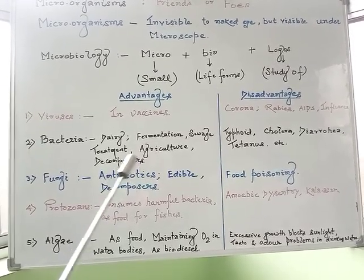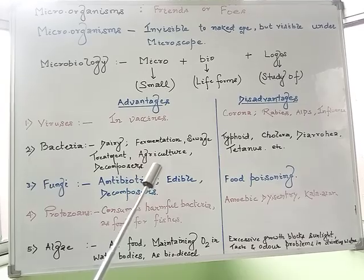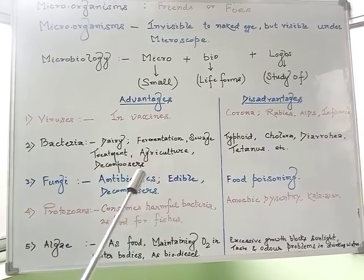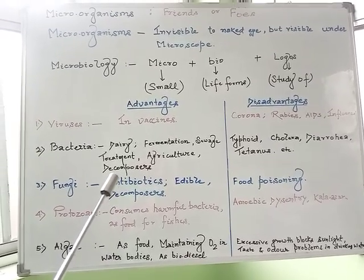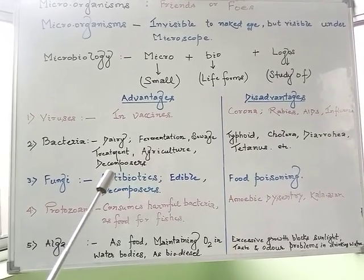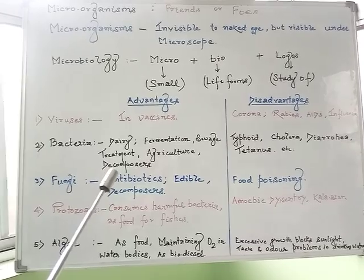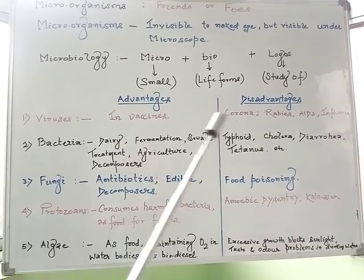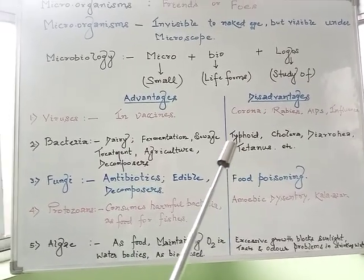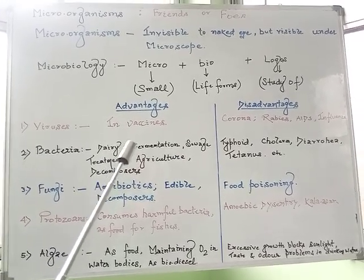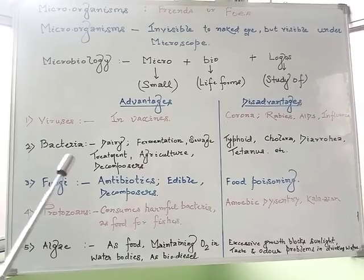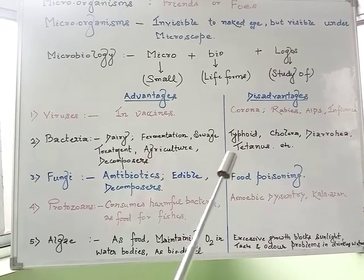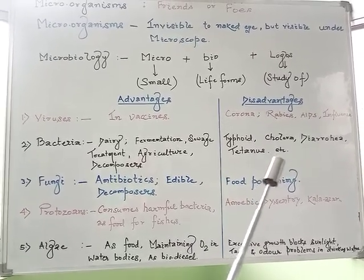Bacteria are also used in the agriculture sector for the fixation of nitrogen within the soil, and they play a vital role as decomposers. Decomposers play a very significant role in nature by recycling nutrients within the soil. As for the disadvantageous aspect, there are certain diseases caused by bacteria — examples include typhoid, cholera, diarrhea, tetanus, anthrax, etc.